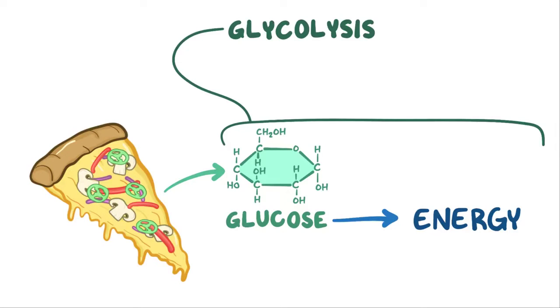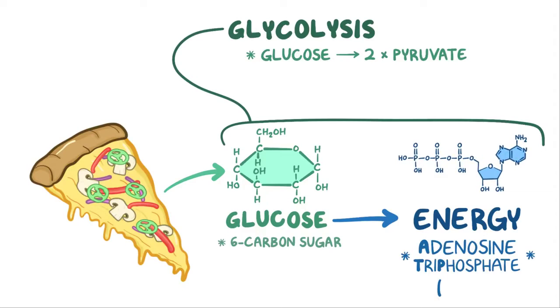Glycolysis is a series of enzymatic reactions in which glucose, a 6-carbon sugar molecule, is broken down into two 3-carbon pyruvate molecules. And as glucose gets processed, energy is produced in the form of adenosine triphosphate, or ATP.